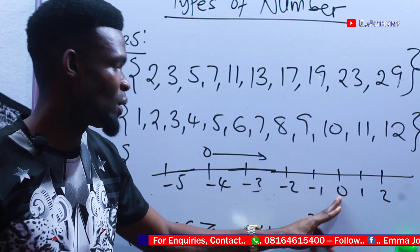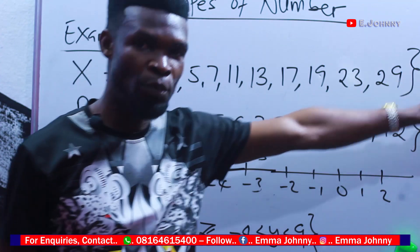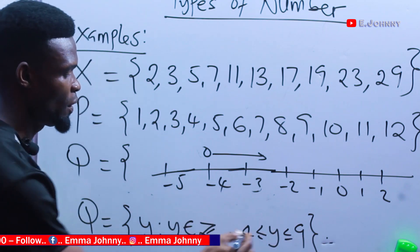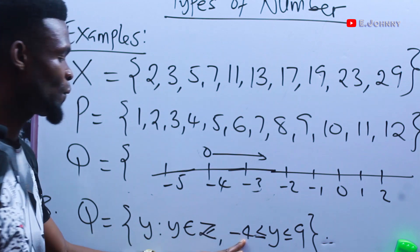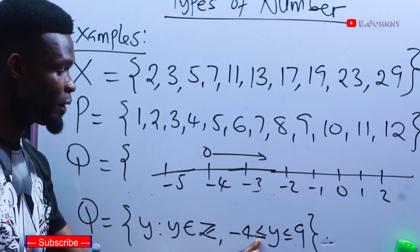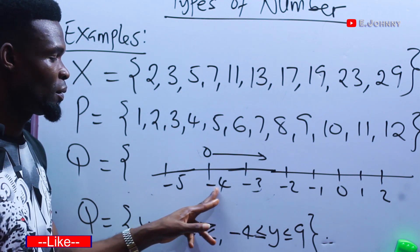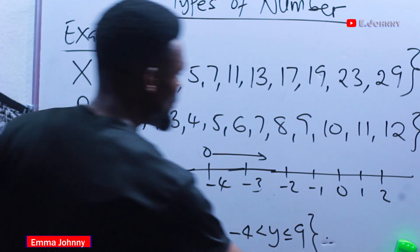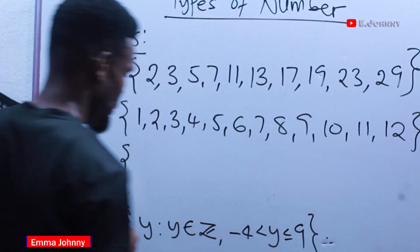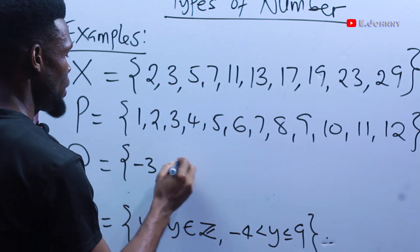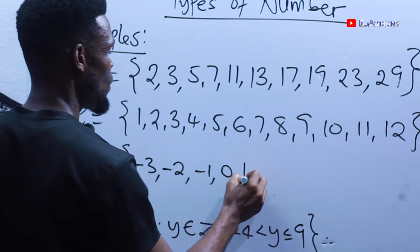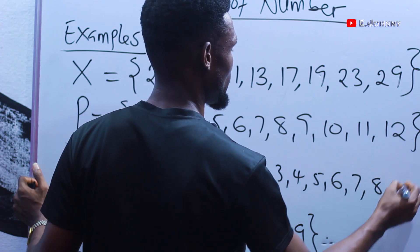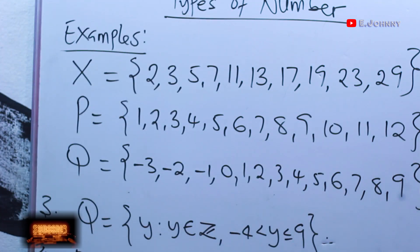If it had been 'greater than or equal to minus 4,' then minus 4 would also be inclusive. So the elements of set Q are: minus 3, minus 2, minus 1, 0, 1, 2, 3, 4, 5, 6, 7, 8, and 9.